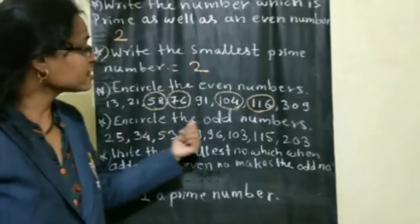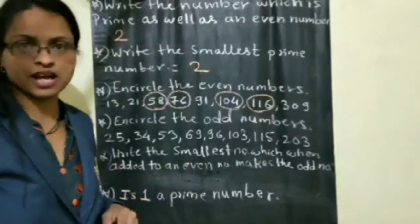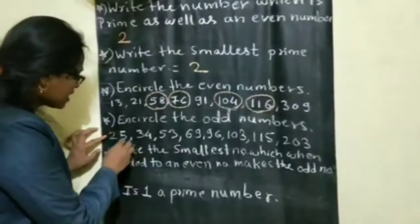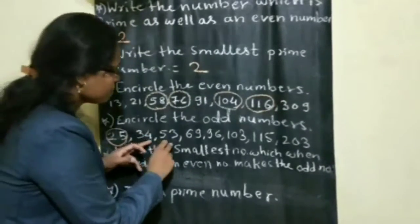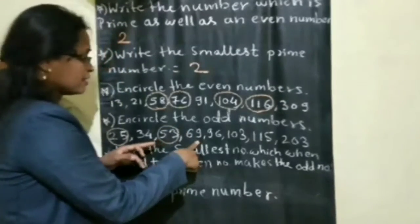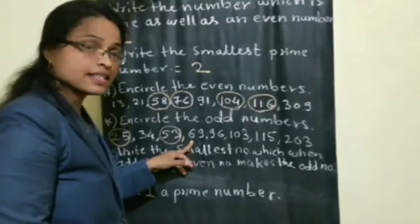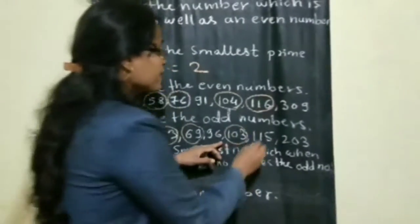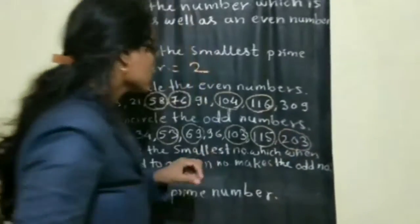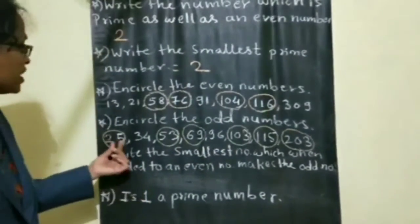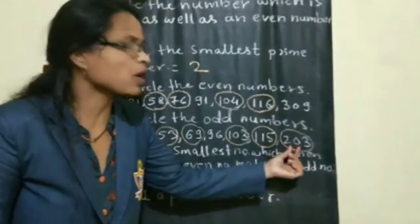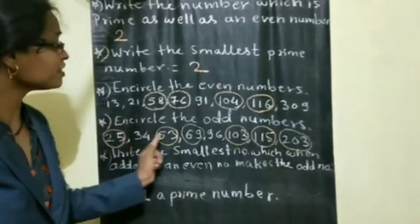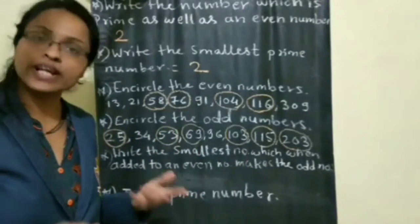Next example: circle the odd numbers from the given group. 25 is an odd number. 34 is an even number. 53 is an odd number. 69 is an odd number. 96 is an even number. 103 is an odd number. 115 is an odd number. 203 is an odd number. So 25, 53, 69, 103, 115, and 203 are the odd numbers. If the numbers are large, observe the one's place — you will automatically understand which are odd and even.